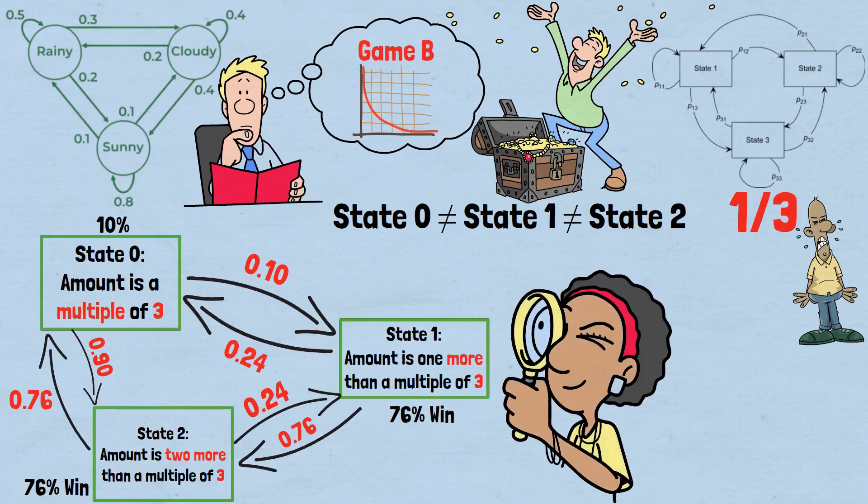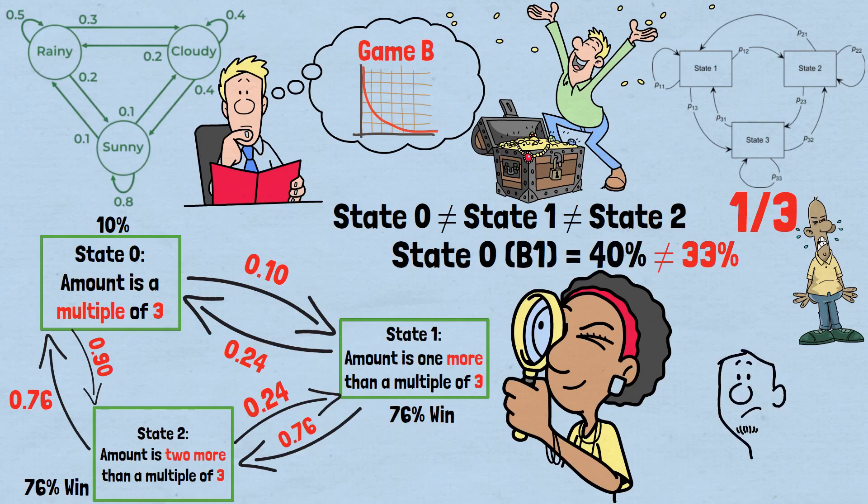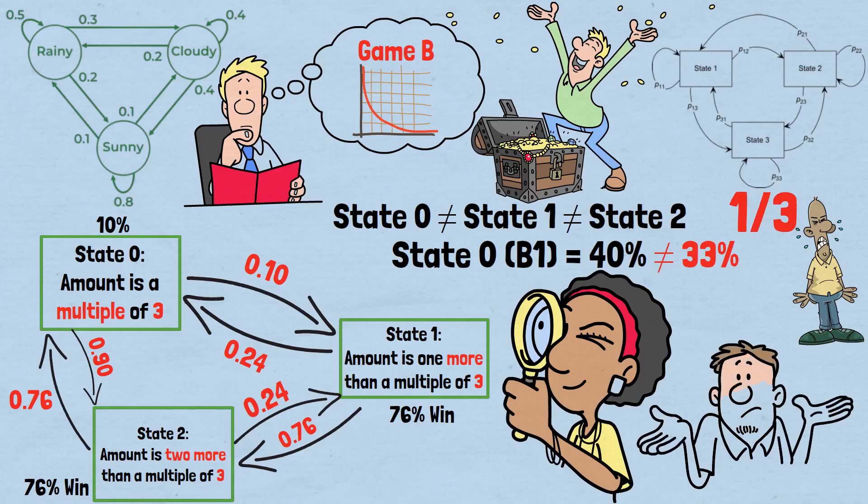Analyzing this transition matrix reveals that the long-term probability of being in state zero, where you must play B1, is approximately 40%, not 33%. This higher-than-expected frequency of playing the terrible B1 game is what makes Game B a long-term loser.